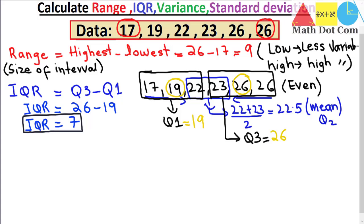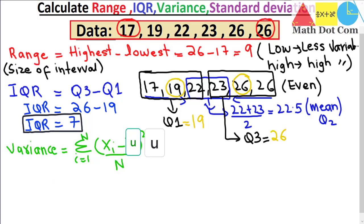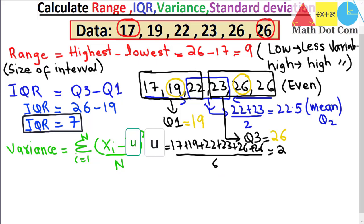The next measure of variability is variance. The formula is: σ² equals the summation from i=1 to n of (Xi minus the mean)², divided by n, where n is the total number of values. First we find the mean: 17 plus 19 plus 22 plus 23 plus 26 plus 26, divided by 6, equals 24.1.